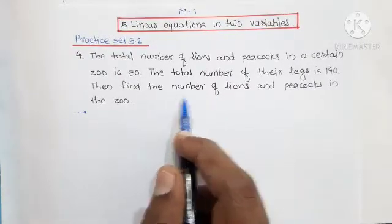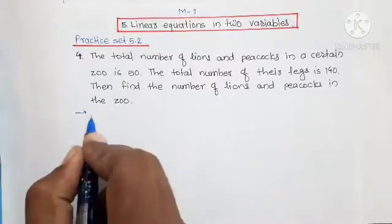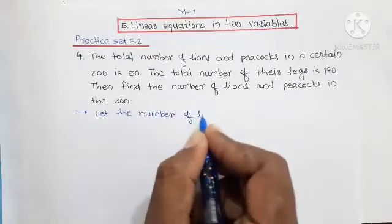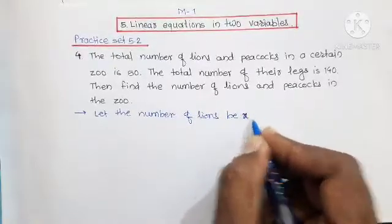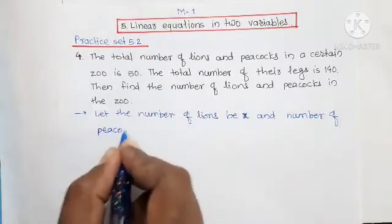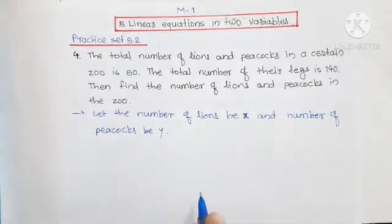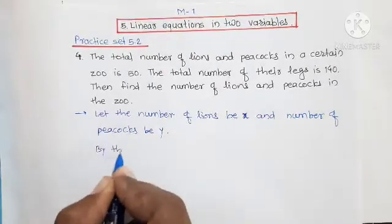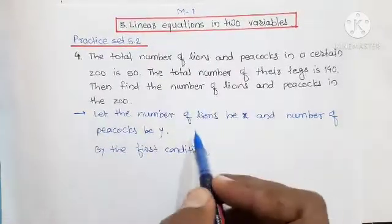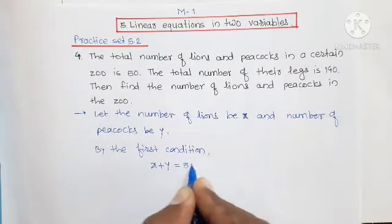First we take variables for the two unknown quantities we have to find — the number of lions and peacocks. Let the number of lions be x and the number of peacocks be y. By the first condition, the sum of their numbers is 50. Therefore, x plus y equals 50.